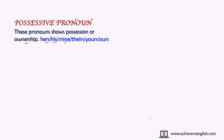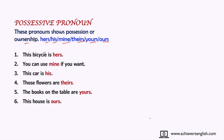Possessive pronouns show possession or ownership. The words used are: hers, his, mine, theirs, yours, and ours. For example, 'This bicycle is hers' — if this bicycle is Sheena's, then Sheena is replaced and we write 'hers.' 'This car is his' — 'his' is used for the person who owns that car. 'Those flowers are theirs' — 'my neighbors' is replaced by 'theirs.' All these words show ownership, so they are possessive pronouns.